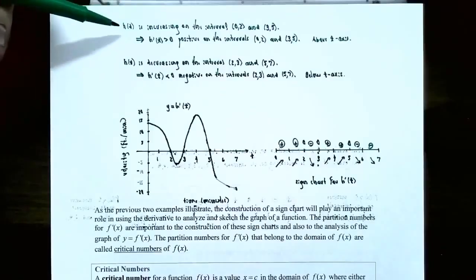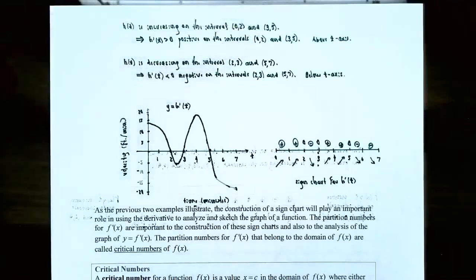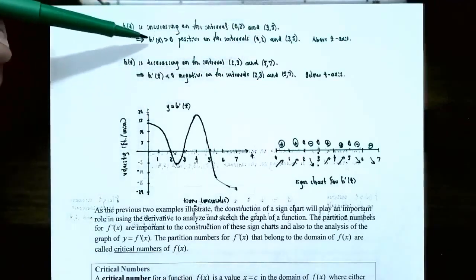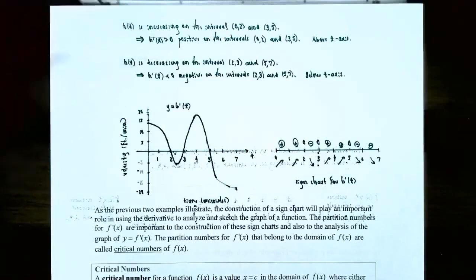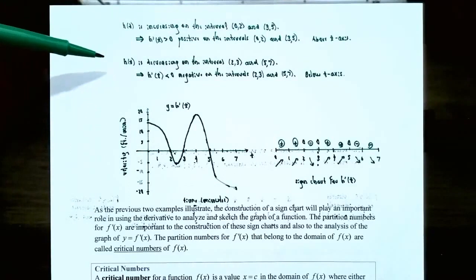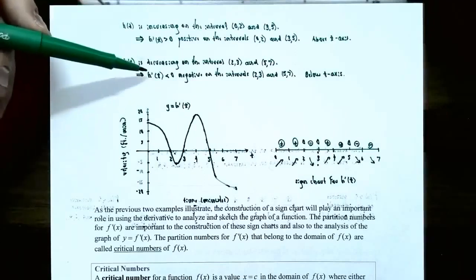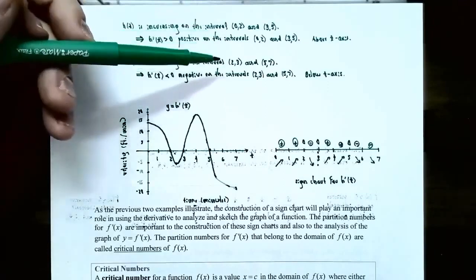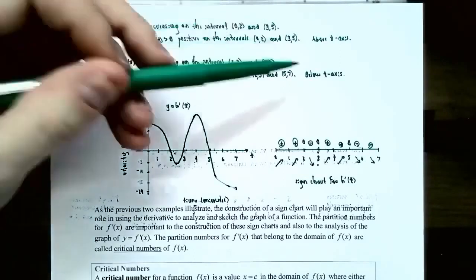h(t) is increasing on (0, 2) and (3, 5), so h'(t) > 0 on those intervals — meaning the derivative graph is above the t-axis there. h(t) is decreasing on (2, 3) and (5, 7), so h'(t) < 0 on those intervals — meaning the derivative graph is below the t-axis. Let's make a sign chart for h'(t) from t = 0 to t = 7.